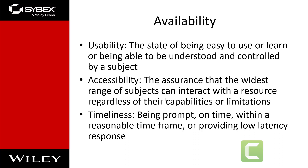Some events that lead to availability breaches include accidentally deleting files, over-utilizing a hardware or software component, under-allocated resources, and mislabeling or incorrectly classifying objects. Availability violations can also occur because of an oversight in a security policy or a misconfigured security control.